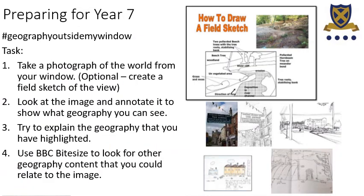In preparing for you starting year 7, I've got a task for you called 'Geography Outside My Window'. It's designed to make us realise that geography is happening at all times in every place — you can look out of your window right now and see something geographical that relates to topics in school. Your task is to take a photograph of the view from your window, or if you're feeling creative, you can create a field sketch — a simple drawing based on what you can see.